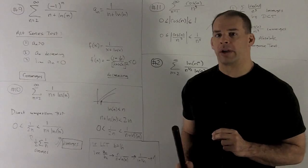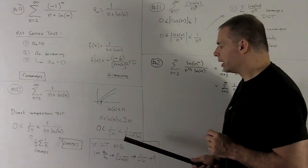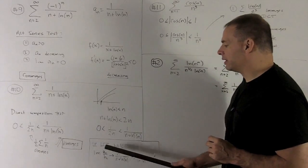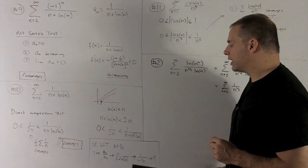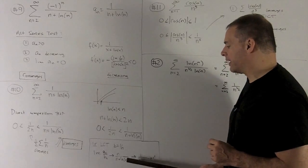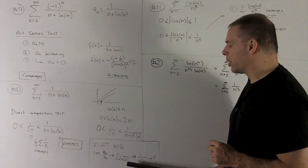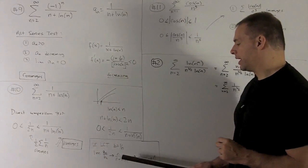We can get to the answer a little bit quicker if we use the limit comparison test. So, in this case, I'm going to use b sub n equal to 1 over n. And then, we're going to take the limit of a sub n over b sub n. So, that's going to give me 1 over n plus natural log of n. And then, we're going to divide that by 1 over n. But, that's the same as multiplying by n. So, I get an n on top.